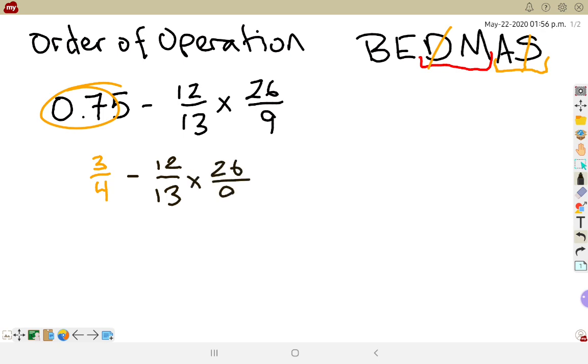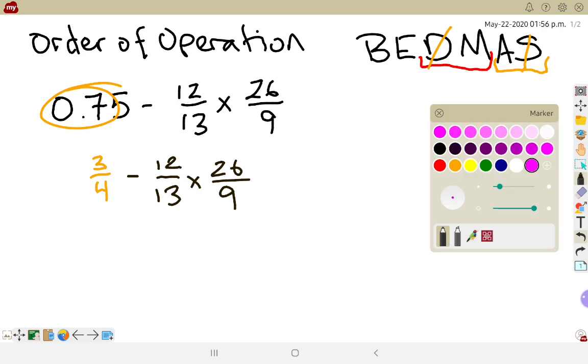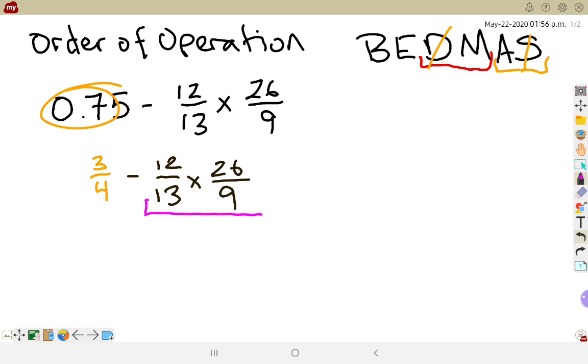I have a subtraction operation and a multiplication operation. So I'm going to deal with the multiplication first. So I'm looking at this part here first. So I'm going to look for any cross-reducing. So I see between 12 and 9, they both have a common factor of 3. So I'm left with a 4 in the numerator, a 3 in the denominator.